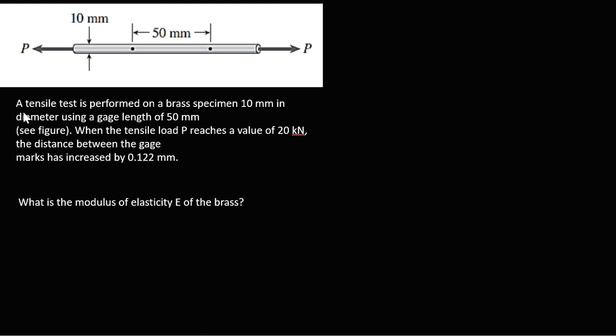With all that being said, let's just read this problem that we have here. A tensile test is performed on a brass specimen 10 millimeters in diameter using a gauge with a length of 50 millimeters.